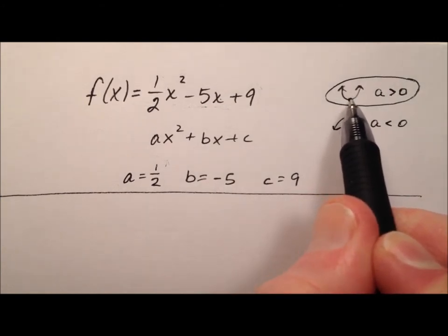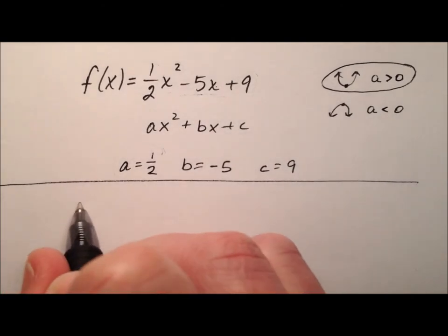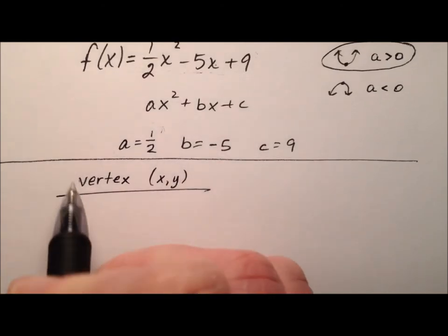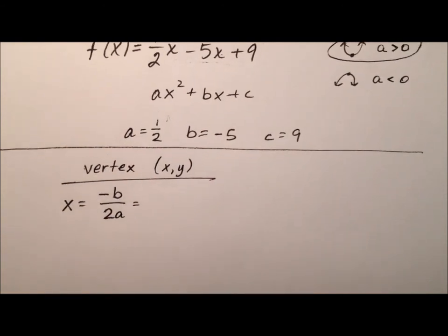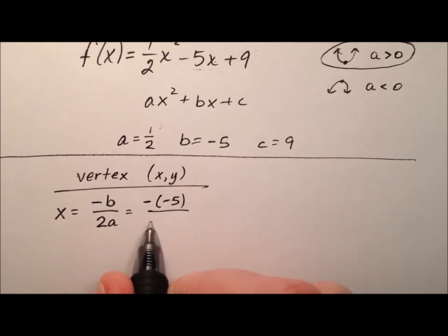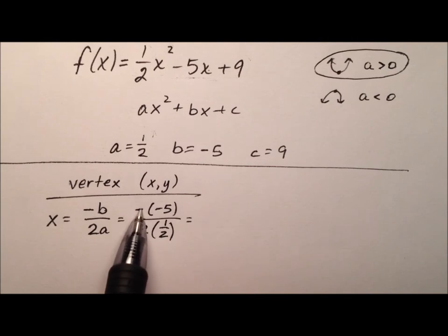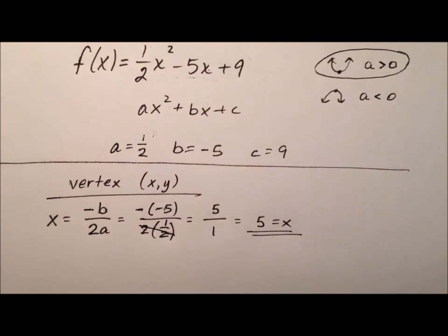Since the parabola opens upward, its vertex is going to be a minimum value of the function. The vertex has an x value and a y value — it's an ordered pair. We can find the x value by taking the opposite of b over 2a. My b value was negative 5, so it's the opposite of negative 5, over twice the a value of ½. The opposite of negative 5 is positive 5, and 2 times ½ is 1, so 5 over 1 is 5. The x-coordinate of our vertex is 5.